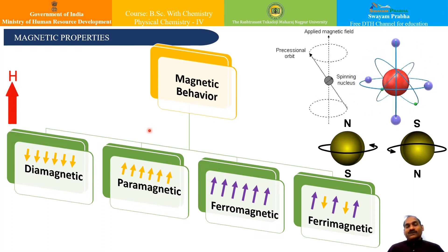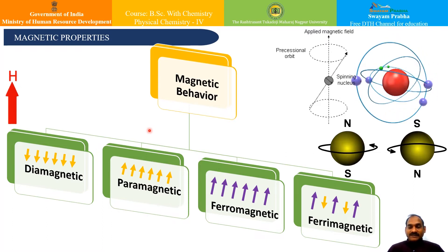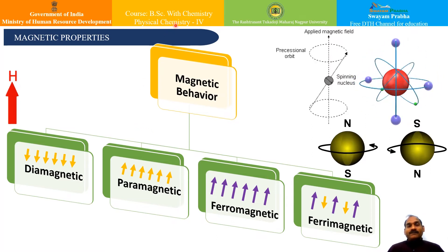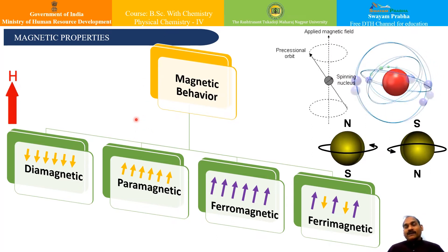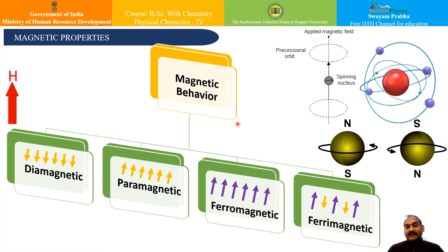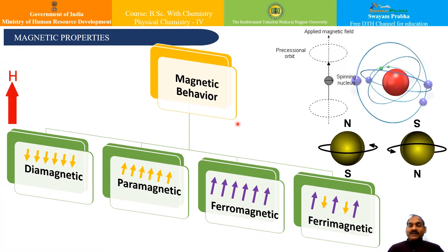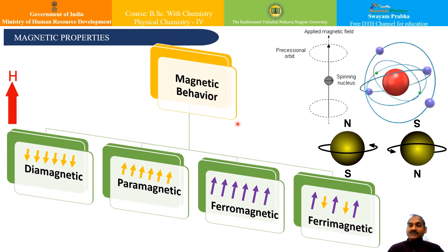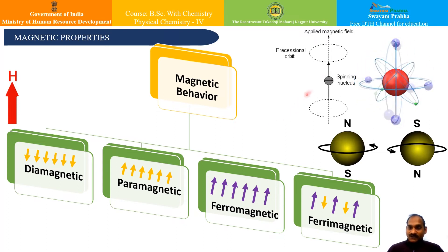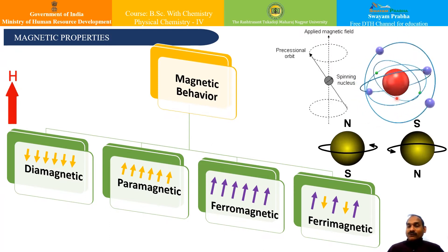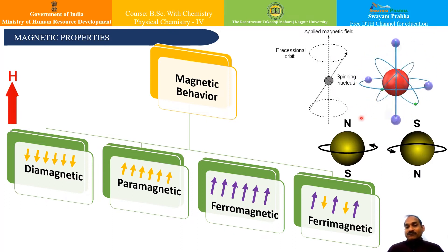We know magnetism as a very fascinating aspect. Magnetism is an interesting phenomenon which involves the interaction of some substance with the applied magnetic field. Magnetic properties, whatever they arise in substances, they arise due to the motion of electrons. This motion of electrons is very peculiar. We know that the electron has two types of motion.